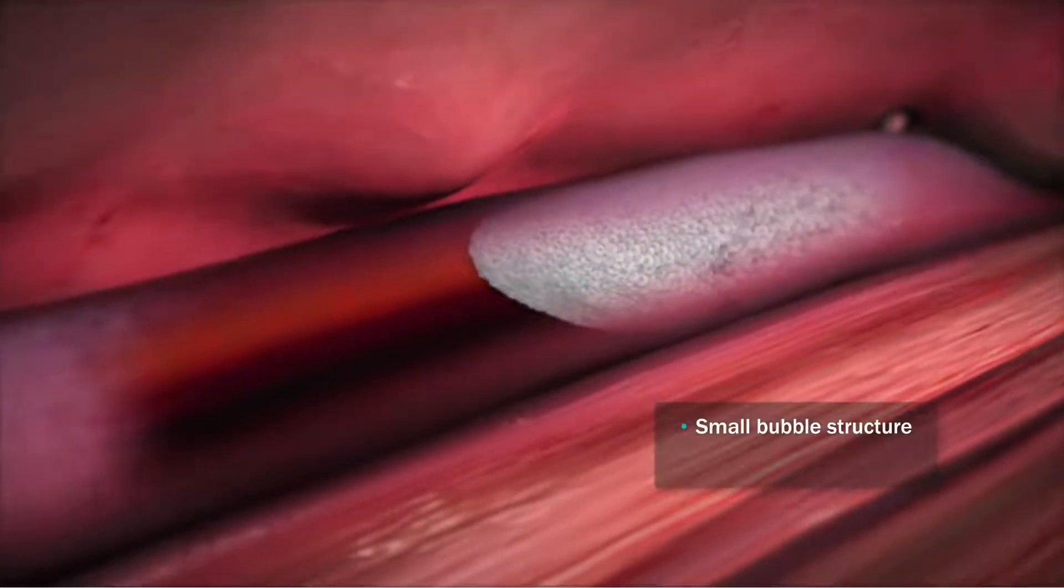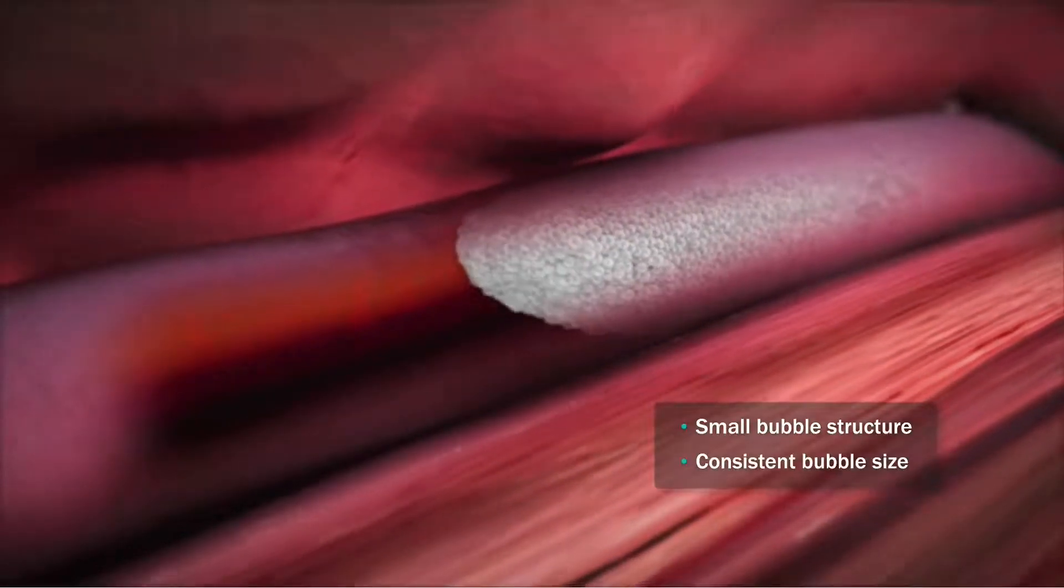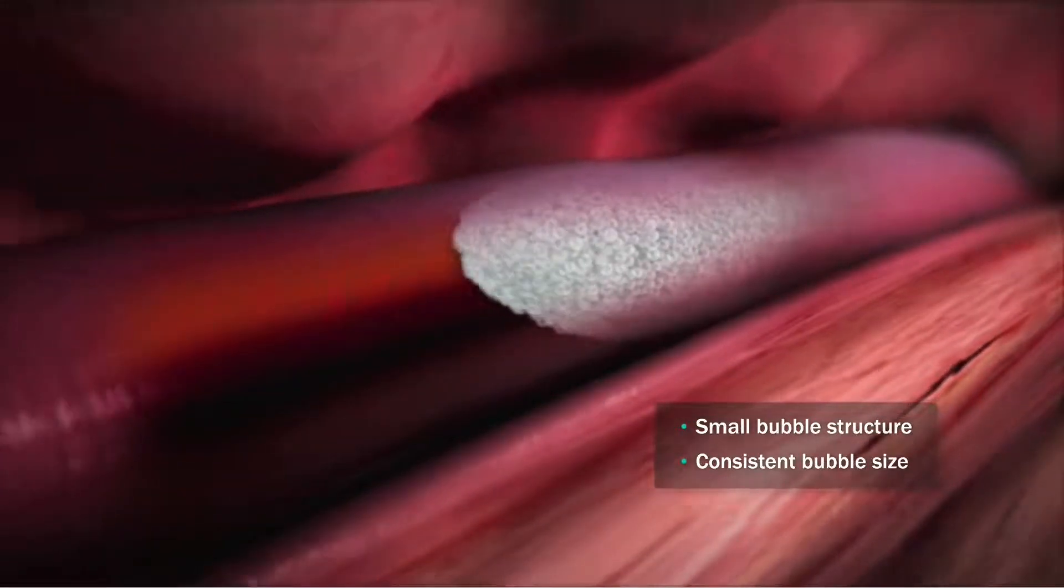The physical properties of Varathena, with its small bubble structure and consistent bubble size, make it cohesive, aiding in the displacement of blood and facilitating the filling of the lumen.